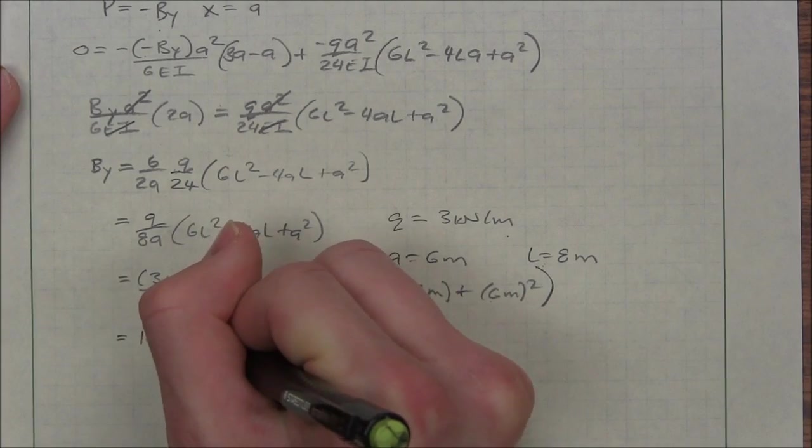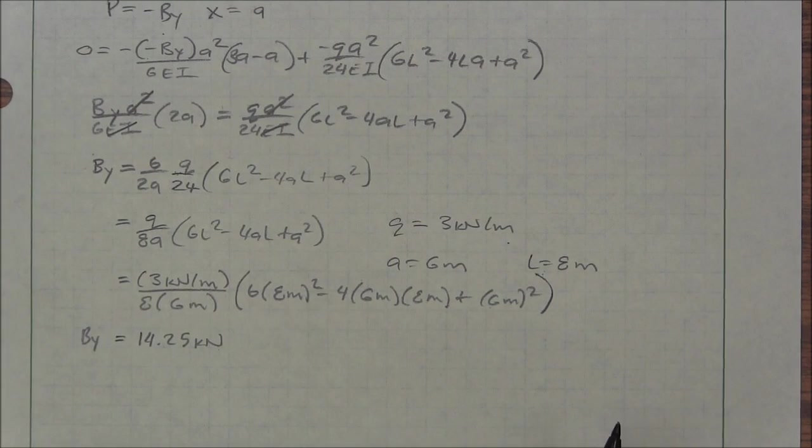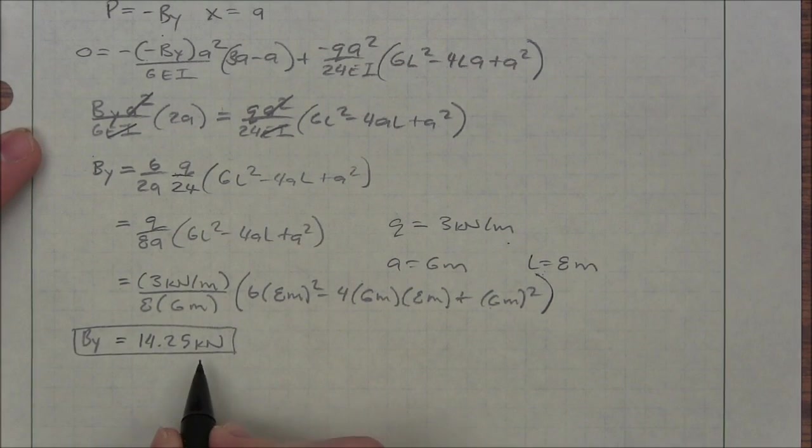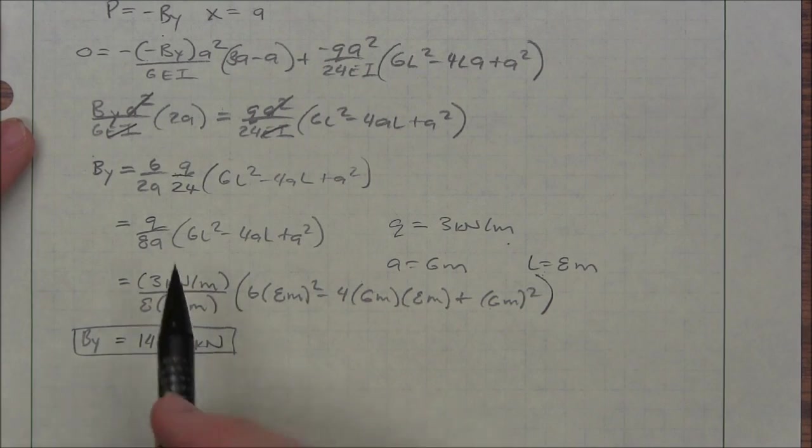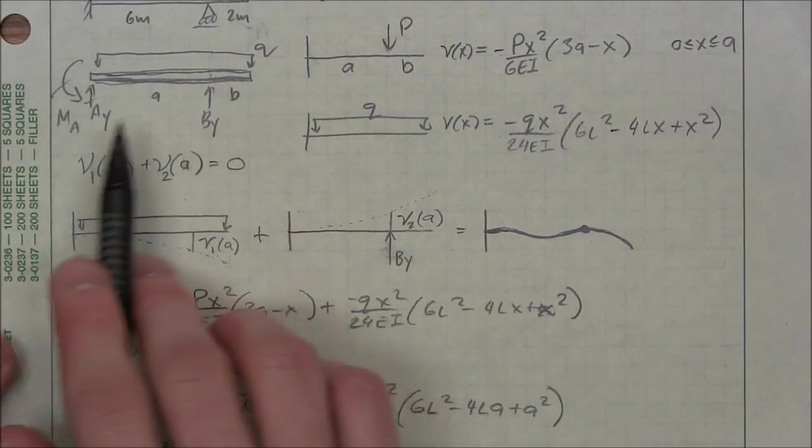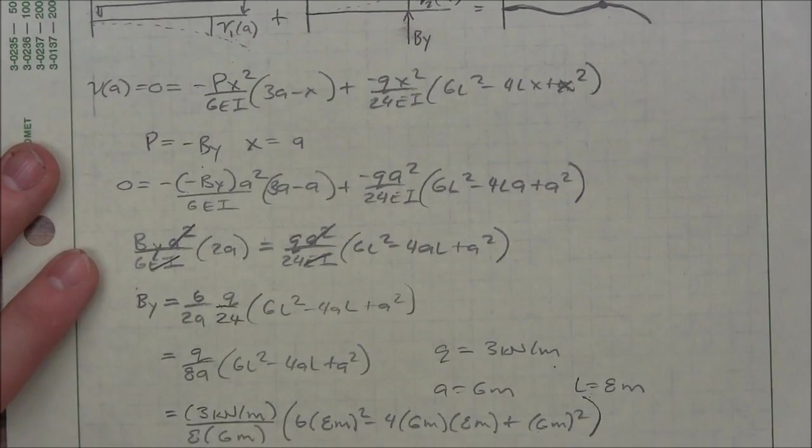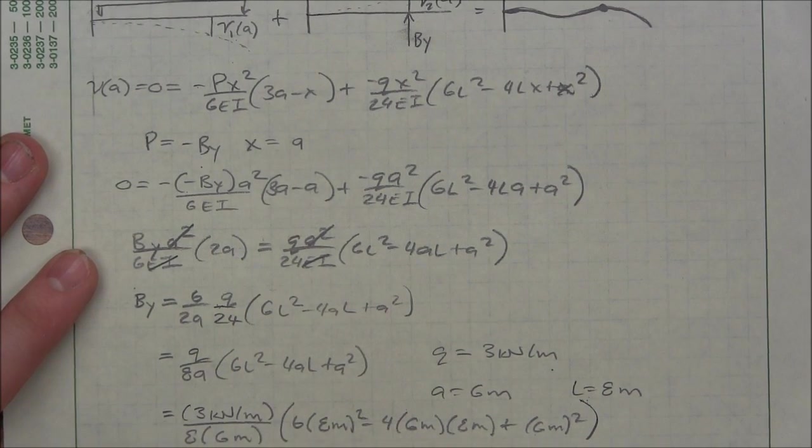14.25 kilonewtons is our force for BY. Look, we haven't even know how to do any statics yet. That isn't my final answer, but this is the key so I can get the rest of my forces up here. So basic statics will tell me some of the forces in the y direction. I have my upward 14.25 kilonewtons. That's BY.